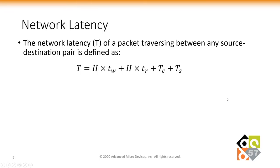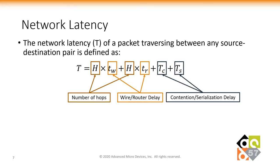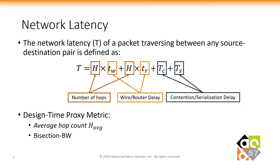Engineers use a variety of metrics to evaluate a topology at design time. The network latency of a packet traversing between any source-destination pair is defined as a function of H (number of hops), TW (per-hop wire delay), TR (router delay), TC (contention delay), and TS (serialization delay). A design-time proxy for latency, independent of runtime traffic contention, is average hop count, averaged over all possible source-destination pairs. Bisection bandwidth is used as a proxy for peak throughput. However, a network on interposer requires modifications to these design-time metrics for effective usage.